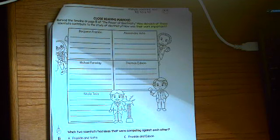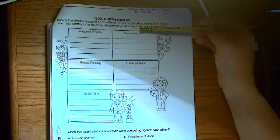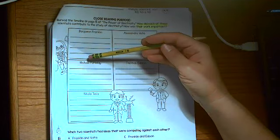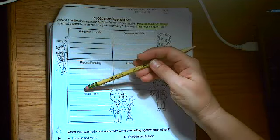So we'll be looking at Benjamin Franklin, Alessandro Volta, Michael Faraday, Thomas Edison, and Nikola Tesla.